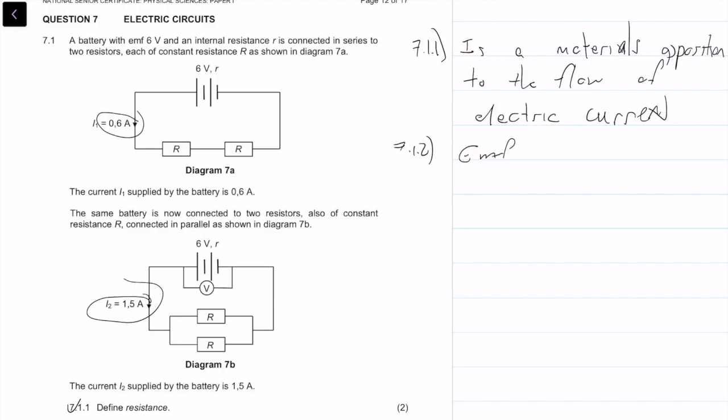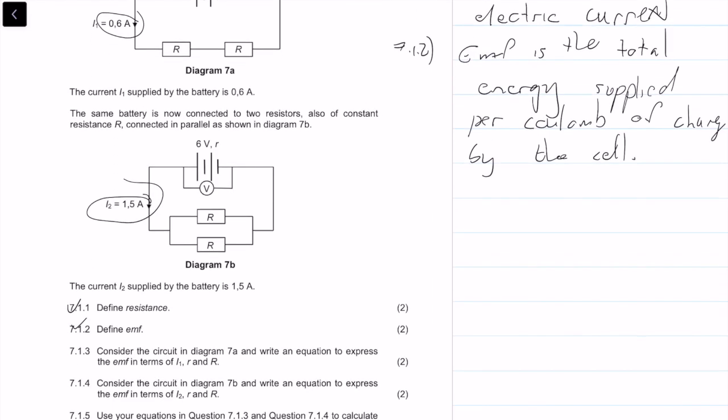7.1.2: Our emf is the total energy supplied per coulomb of charge by the cell. Another two free marks.